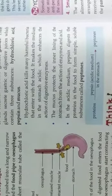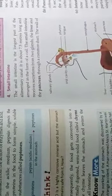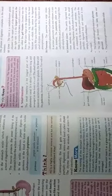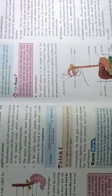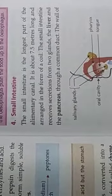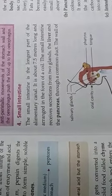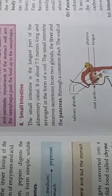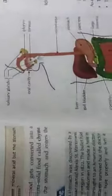Number 4, the small intestine. This is the largest part of the alimentary canal. It is about 7.5 meters long and arranged in the form of a coil. It receives secretion formed from two glands, the liver and pancreas. The wall of the intestine also secrete digestive juices, called intestinal juices.